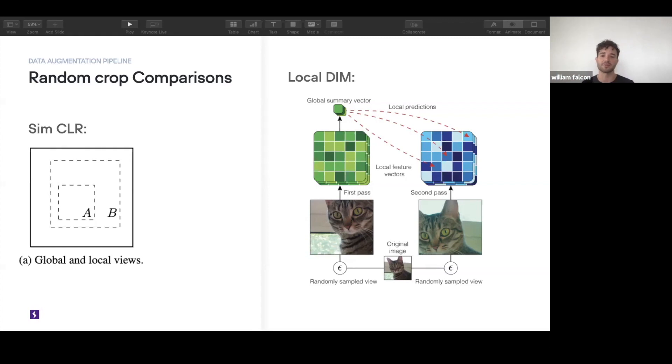They'll take the first image and then they'll take the last feature map block and then they'll compare it to the first one of the second image. They call it like cross spatial comparison. For them, that's their positive pair.